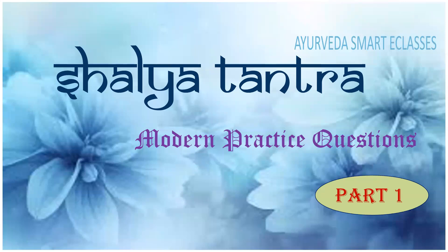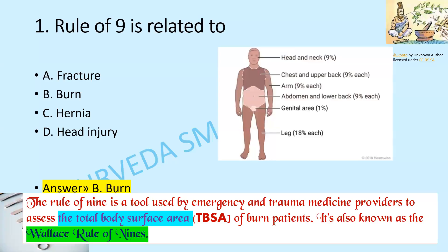Let's study some modern practice questions on Shalyatantra. Rule of 9 is related to which option: fracture, burn, hernia, or head injury? As you know, rule of 9 is related to burns. Rule of 9 is a tool used by emergency and trauma medicine providers to assess the total body surface area (TBSA) of a burn patient. It is also known as the Wallace rule of 9.